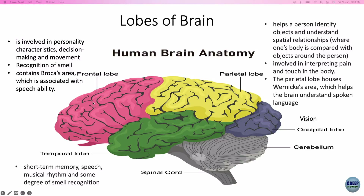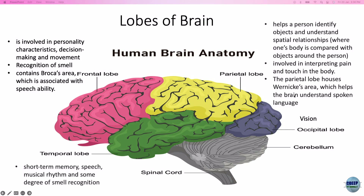The frontal lobe — shown in pink — is involved in personality characteristics, decision making, movement, and recognition of smell. It also contains Broca's area and is associated with speech ability. The parietal lobe on top helps a person identify objects and understand spatial relationships, and involves interpreting pain and touch. The parietal lobe also houses Wernicke's area, which helps the brain understand spoken language.